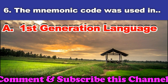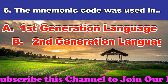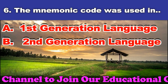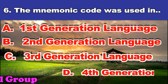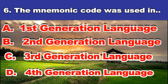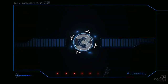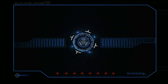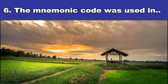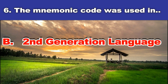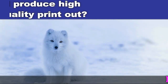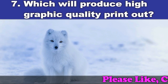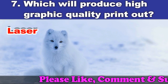Sixth question: The mnemonic code was used in. A. First generation language. B. Second generation language. C. Third generation language. D. Fourth generation language. And the answer is second generation language.